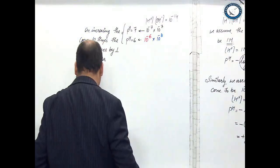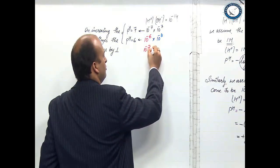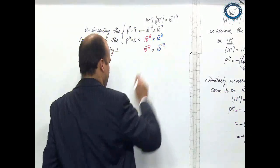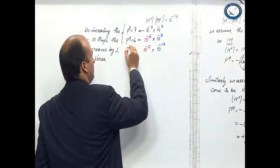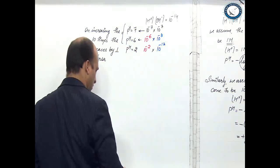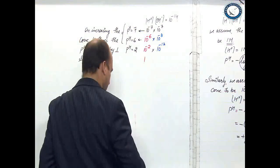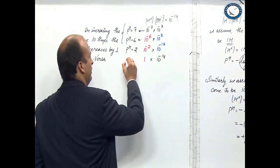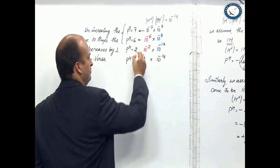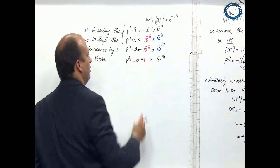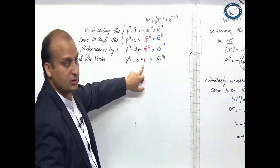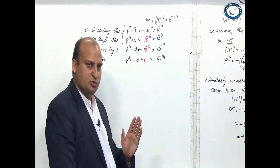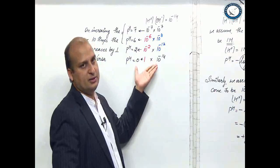If you decrease H plus to 10 raise to power minus 2, OH minus becomes 10 raise to power minus 12, and the pH becomes 2. If you keep increasing the value to 1 molar, OH minus becomes 10 raise to power minus 14, and the pH becomes 0. So as you are increasing the H plus ion concentration, the pH moves towards 0. Moving from 7 towards 0, the acidic strength is increasing.